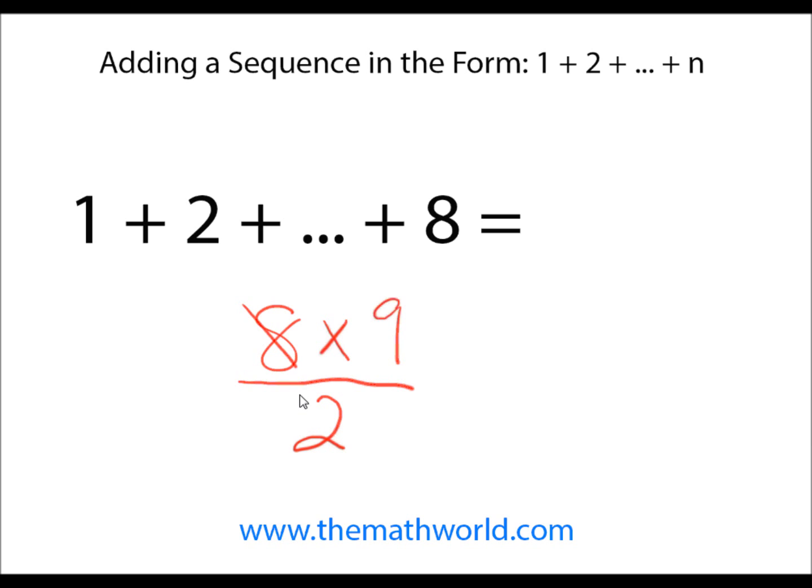We can reduce this. 8 divided by 2 gives us 4 and 1, and so 4 times 9 equals 36. So 1 plus 2 plus 3 plus 4 plus 5 plus 6 plus 7 plus 8 is 36.